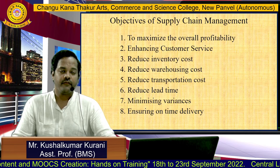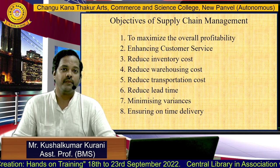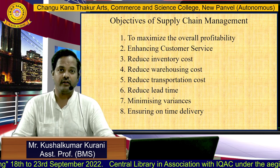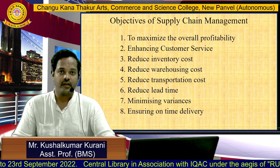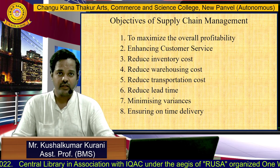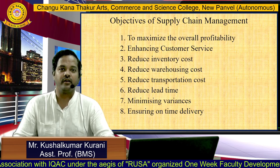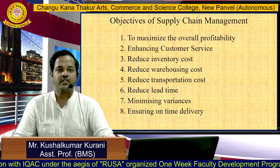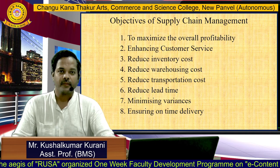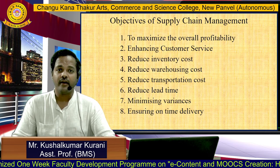Next is minimizing variances. Variance means if a customer orders one product and we deliver some other product, there will be a big variance. What the customer is expecting and what we are delivering — if it is not the same, that leads to variance and eventually customer dissatisfaction. And finally, ensuring on-time delivery is very important. Each and every customer expects the product to be delivered on time. For example, if I order on Swiggy, I expect the food to be delivered quickly because it is connected to my appetite.